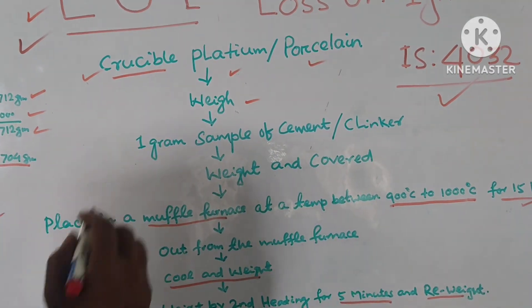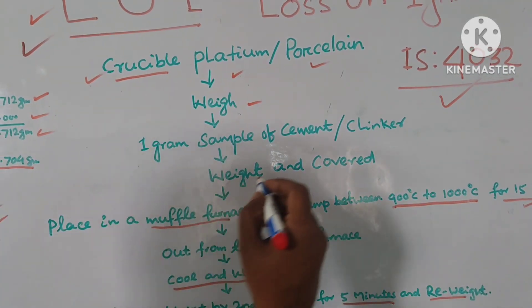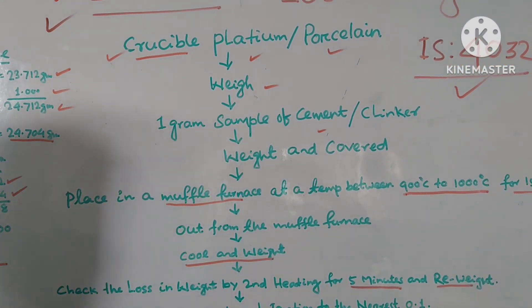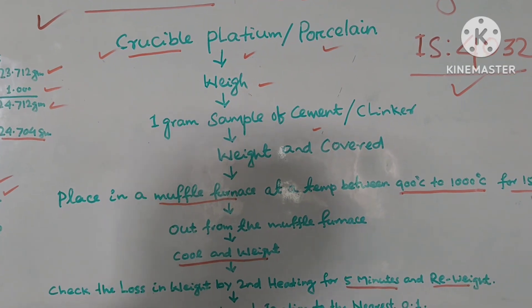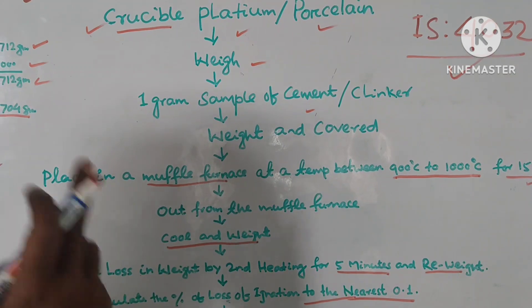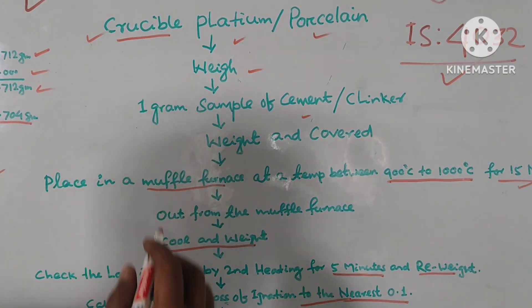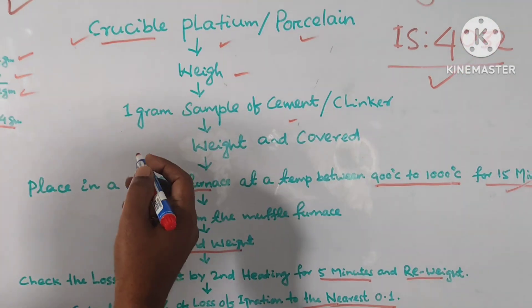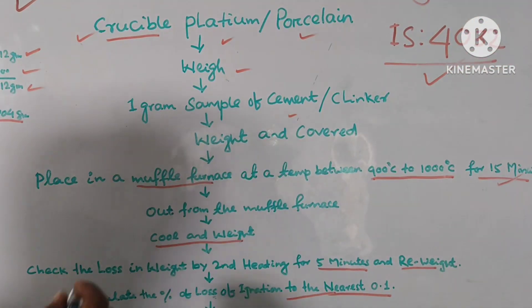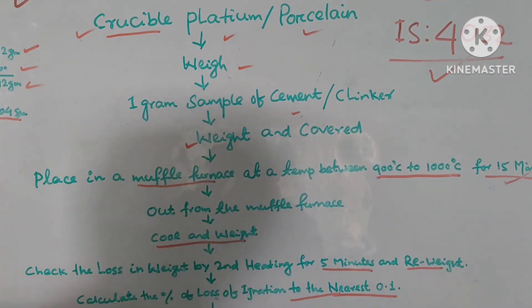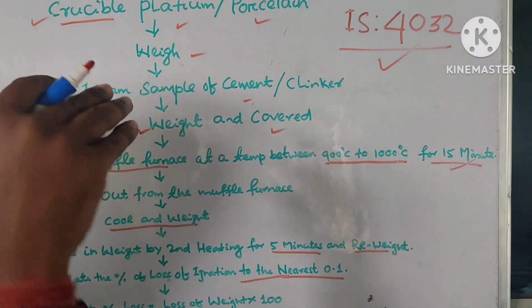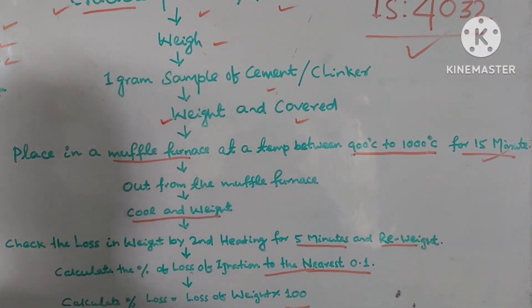And then what? One gram sample of the cement or clinker. Suppose we are going to start the testing for the clinker, so one gram clinker. If you are going to start for the one gram sample of cement, so cement. So if cement, then you can take one gram sample to the crucible, in the crucible. And then weigh the crucible and cover the lid. Complete.